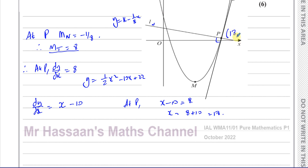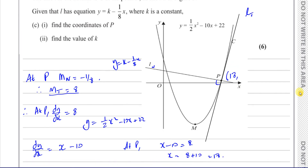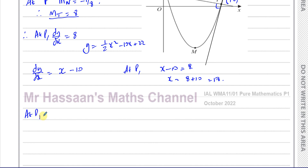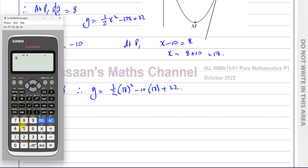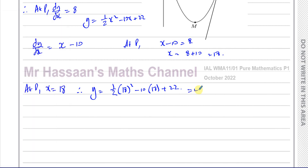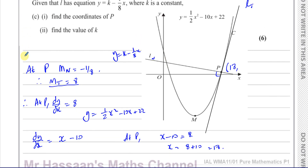The x-coordinate of P is 18. To find the y-coordinate, we substitute x equals 18 into the equation: y equals one-half times 18 squared minus 10 times 18 plus 22. That gives one-half times 324, which is 162, minus 180 plus 22, which equals 4. So the coordinates of P are (18, 4).